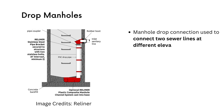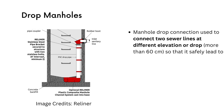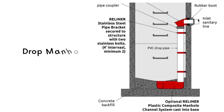Drop manholes are used to connect two sewer lines located at different elevations or drops, leading safely to the main manhole chamber or outlet.